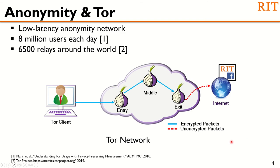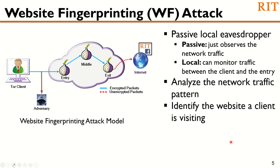Tor is the most popular anonymous system, with almost 8 million users each day and 6,500 relays around the world. Tor can protect the user's privacy by routing the traffic within three nodes between a client and the server. However, Tor is vulnerable to a traffic analysis attack. One such attack is a website fingerprinting attack.